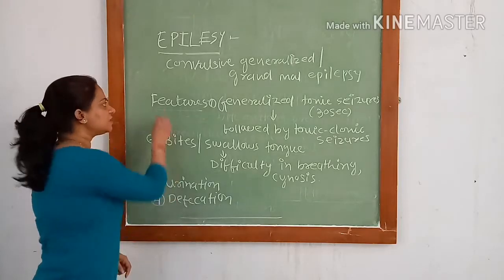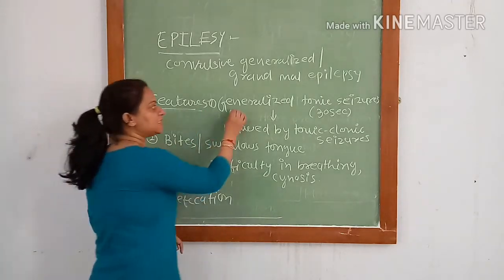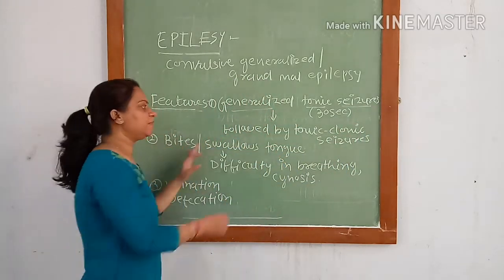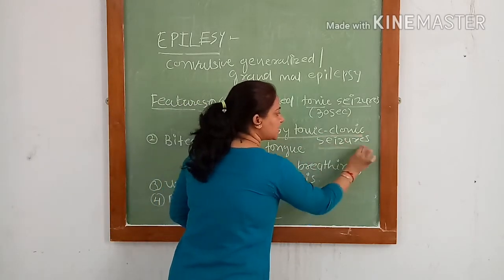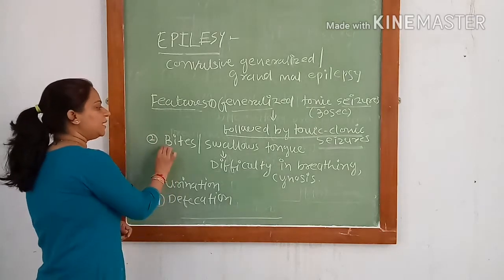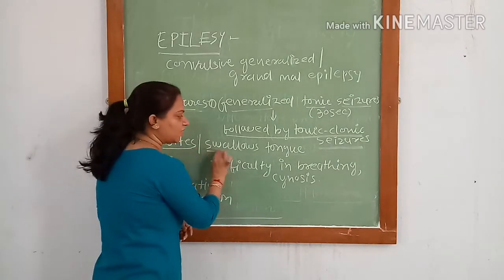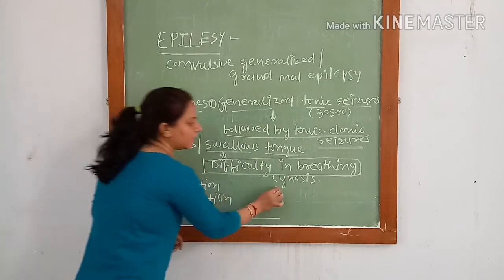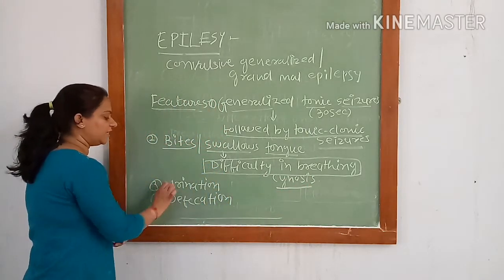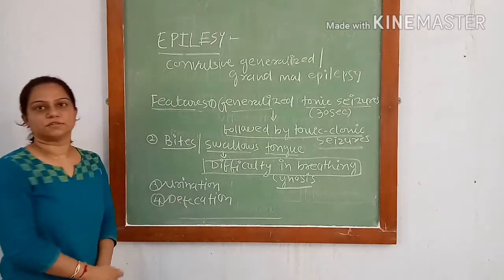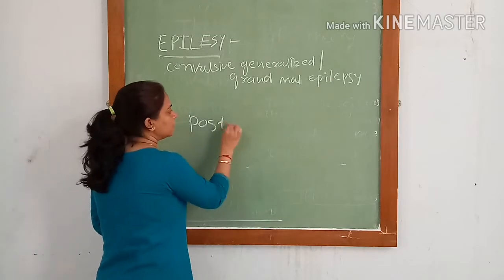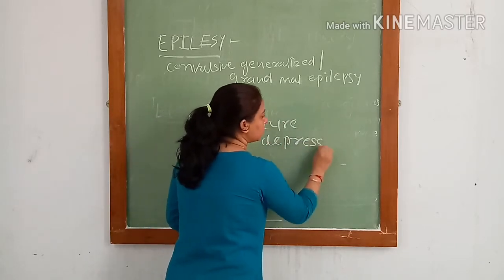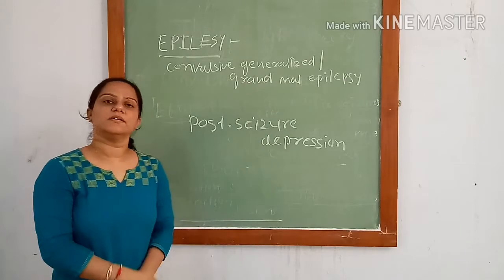Features of grand mal epilepsy: there will be generalized tonic seizures of the entire body for about 30 seconds, followed by tonic-clonic seizures for about 1–2 minutes. There will be biting of the tongue, or the person will try to swallow the tongue, causing difficulty in breathing and even cyanosis. There may also be urination and defecation. This is followed by post-seizure depression of the entire nervous system.